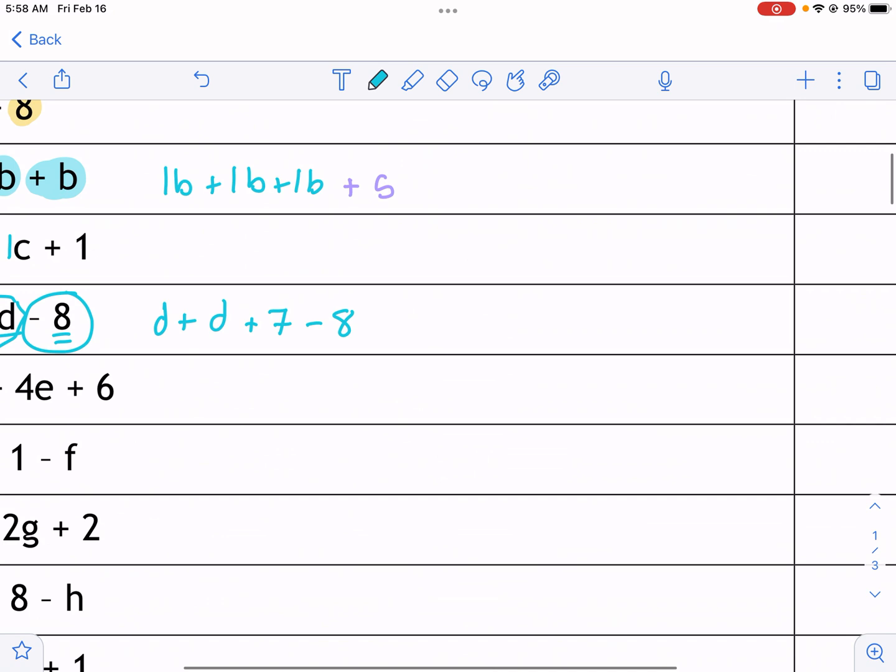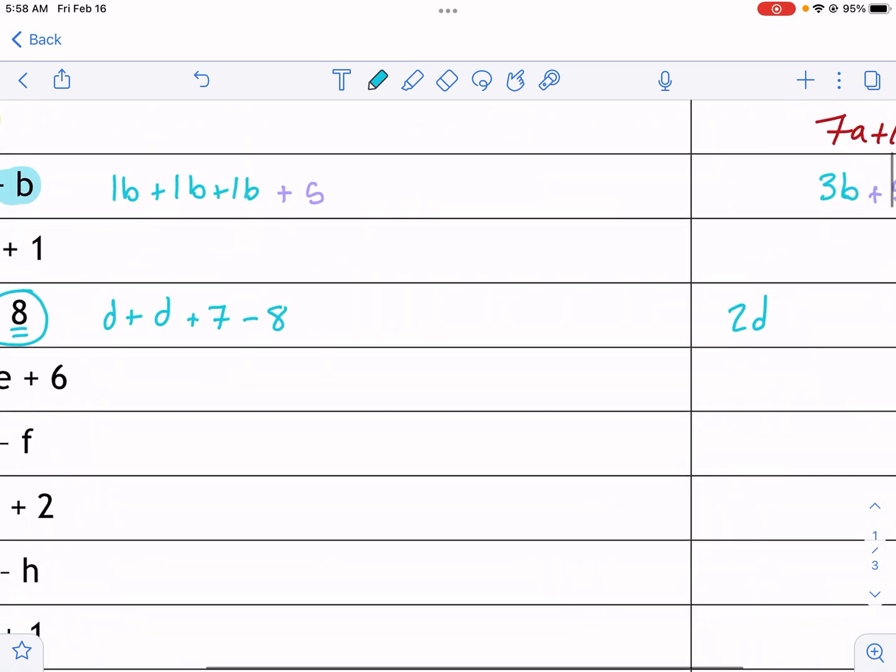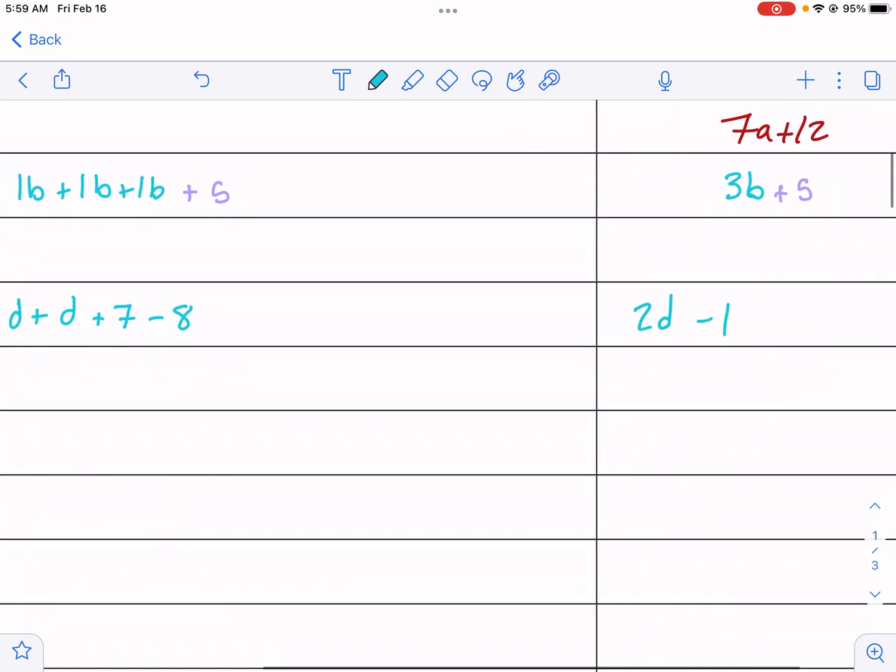So as we add these together, I'm going to have d plus d is 2d. And then I have seven minus eight, that gives me a minus one. So this one has some integer math in it. So if you're unfamiliar with integers, make sure to check out one of my videos on integers. MathSalamanders covers that too.